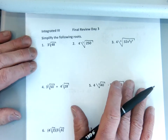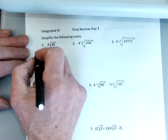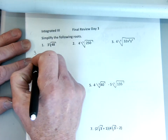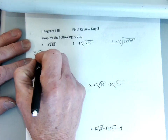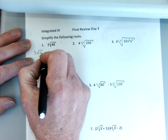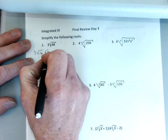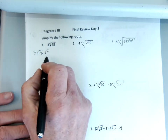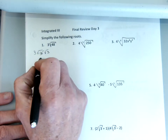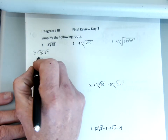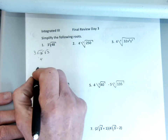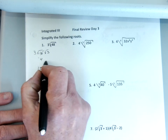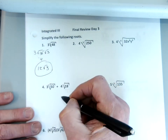Number one: I'm just looking for good multiples of 48, and 16 times 3 is the best. So I go square root of 16 times square root of 3. We know the square root of 16 is 4. 3 times 4 is 12, so it's 12 square root of 3.